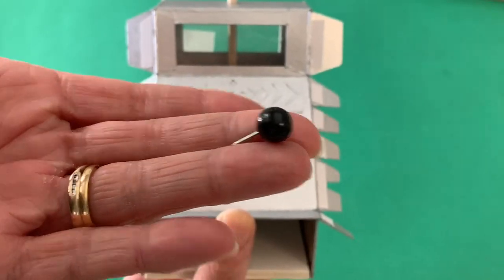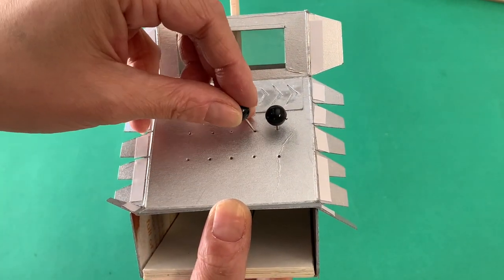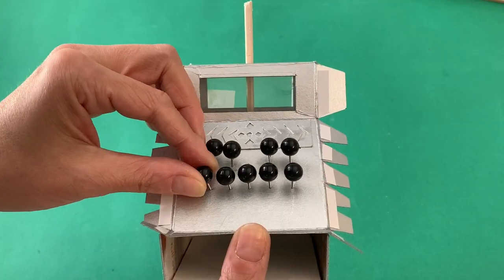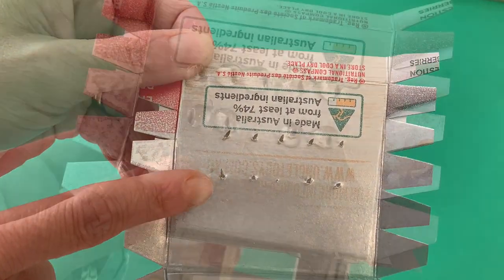For the till buttons, we chose to use black pushpins. We inserted four keys on the top row and five below. Secure them on the underside of the paperboard with drops of hot glue.